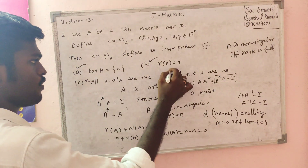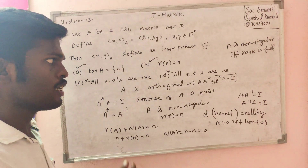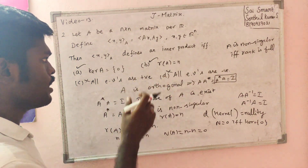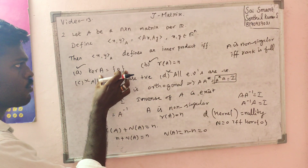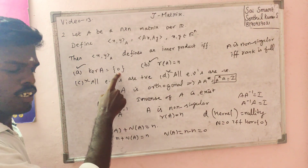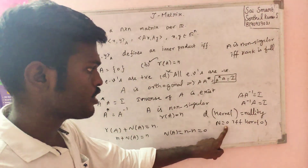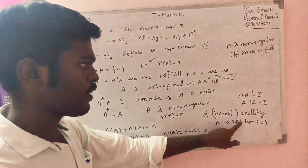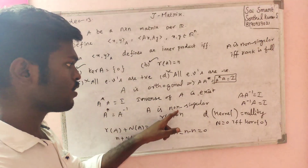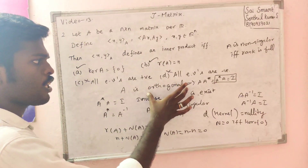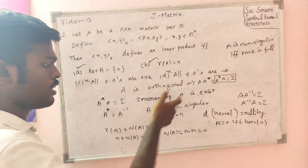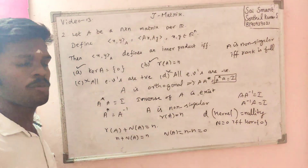Since A is an orthogonal matrix, it is non-singular: A-inverse exists, A-transpose is A-inverse, the rank is full, and the null space contains only the zero vector. So the nullity is 0. This is the result.